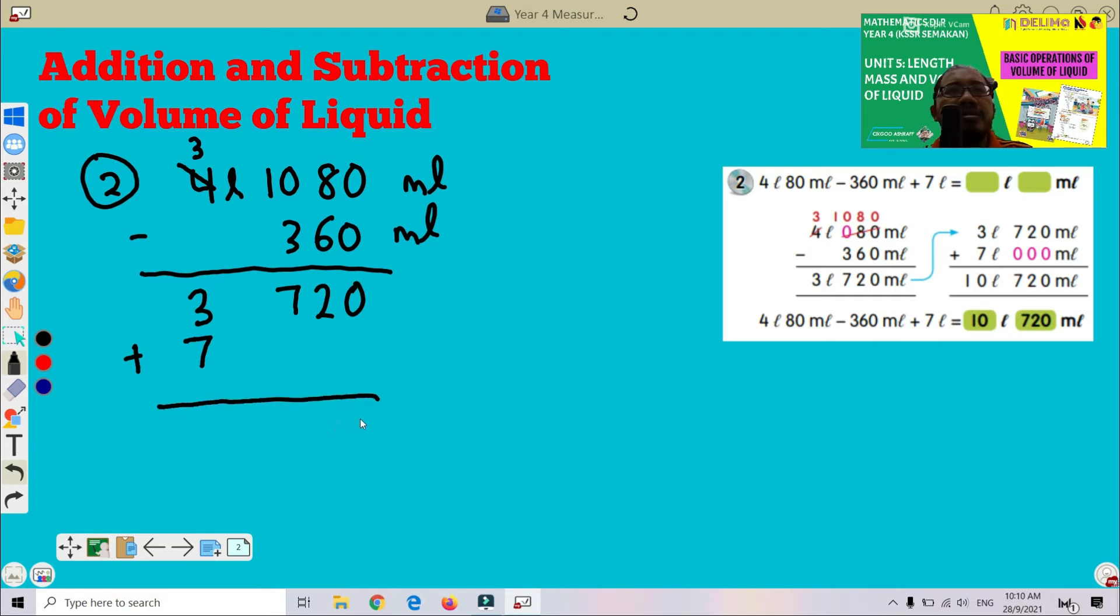Here 0, 2, 7, 3 plus 7 we got 10. The answer is 10 liter 720 milliliter. This is the answer. Very easy.